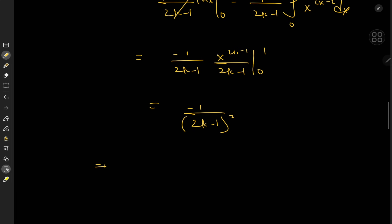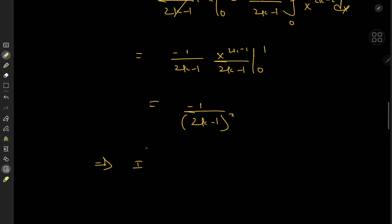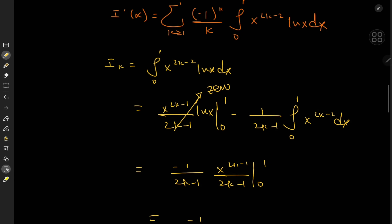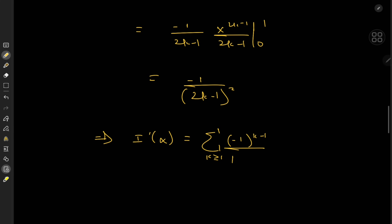Plugging this result into the expression for I prime of alpha, we have the sum over k from 1 to infinity of (negative 1 to the k minus 1) over k times (2k minus 1) squared. And of course we have the stray negative sign outside. Hence we have converted our integration problem into the evaluation of a relatively easy-looking infinite series.